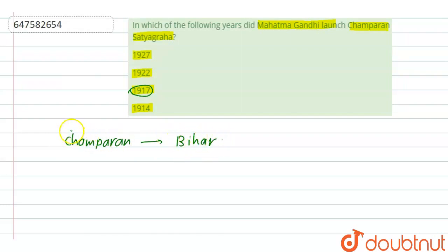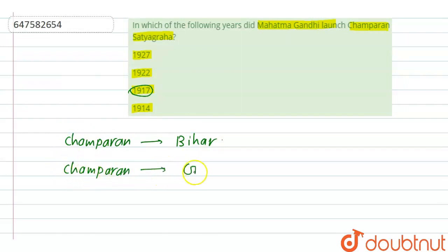The Champaran movement was Gandhi Ji's first national movement.